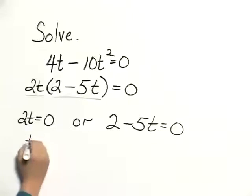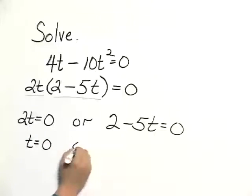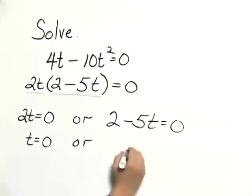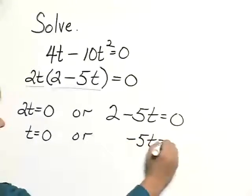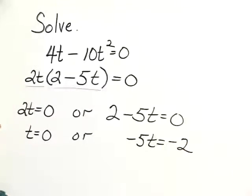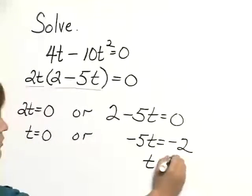If we divide both sides by 2, we get t equals 0. For the second equation, subtracting 2 from both sides gives us negative 5t equals negative 2. Dividing both sides by negative 5 gives us t equals 2 fifths.